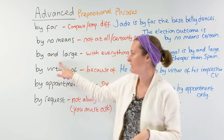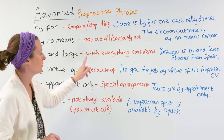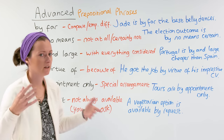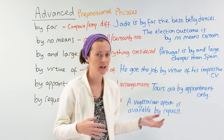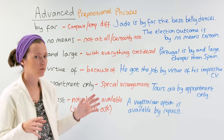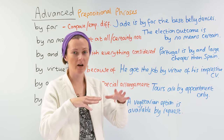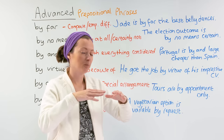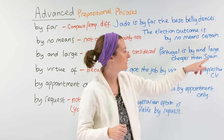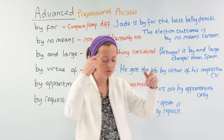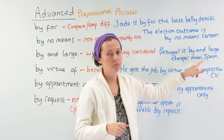The next example is 'by and large,' which means with everything considered. Example: 'Portugal is by and large cheaper than Spain.' I would use that prepositional phrase if I had to consider things in relation to each other first to make my decision. I thought about it, and by and large, Portugal is cheaper than Spain.